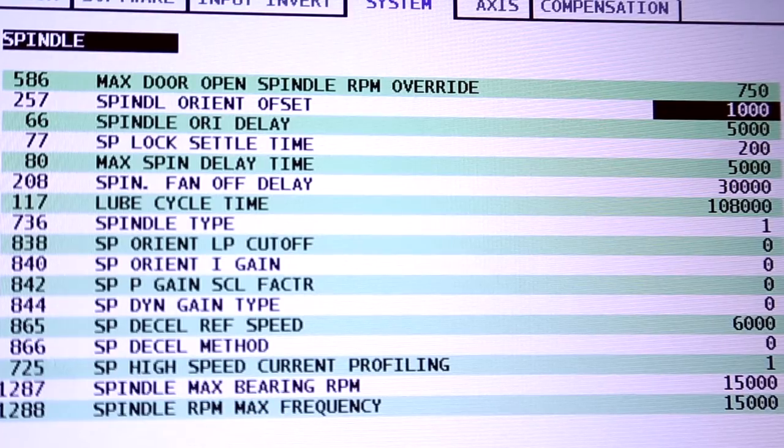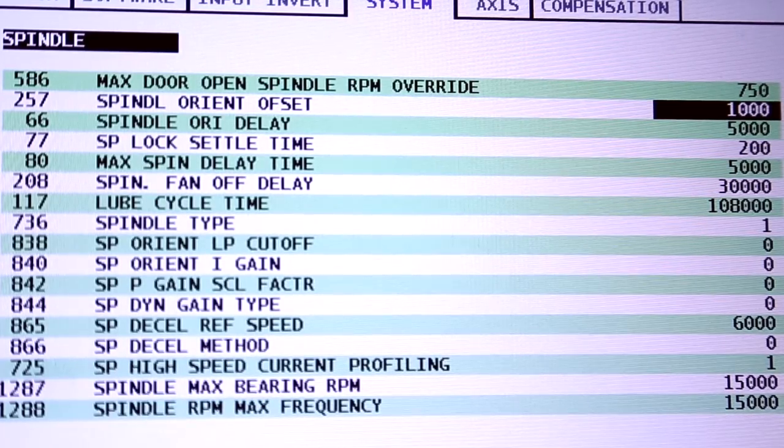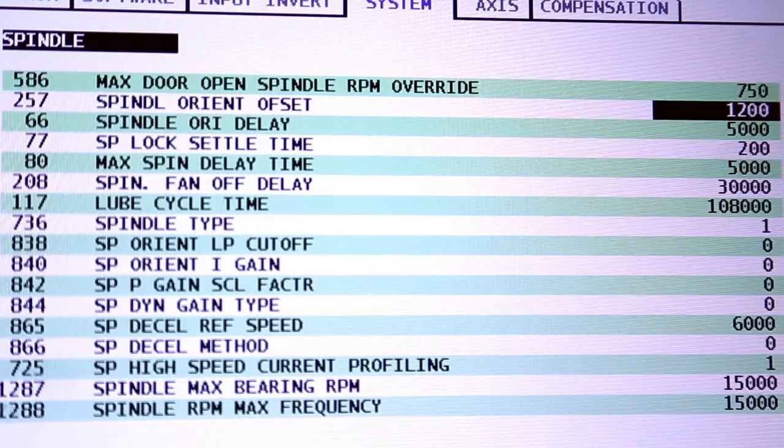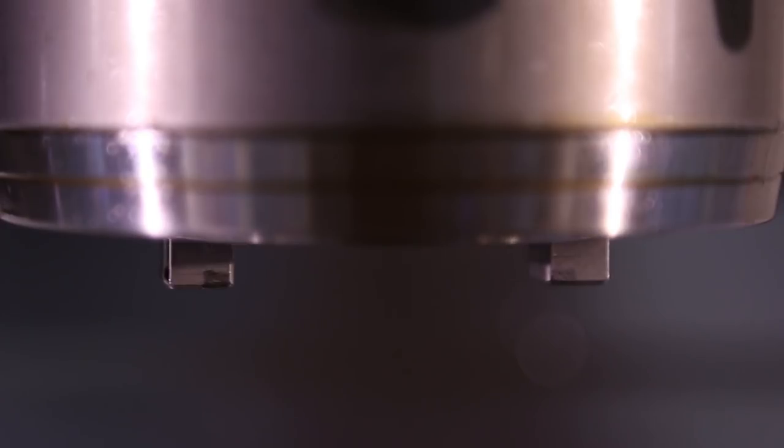The parameter is currently at a thousand so I'll enter 1200 and press spindle orient again and the spindle will orient closer to being parallel to X.